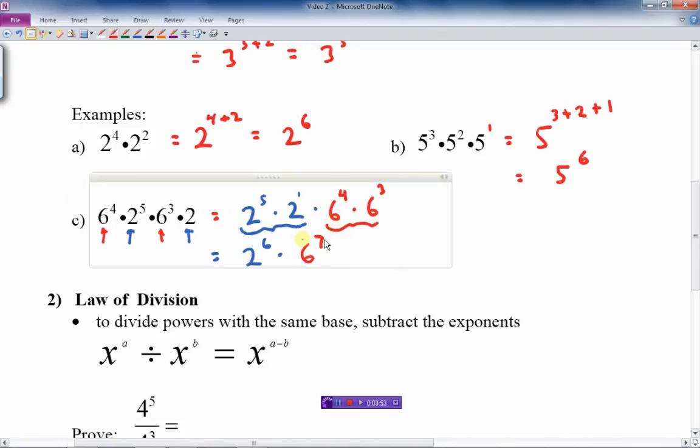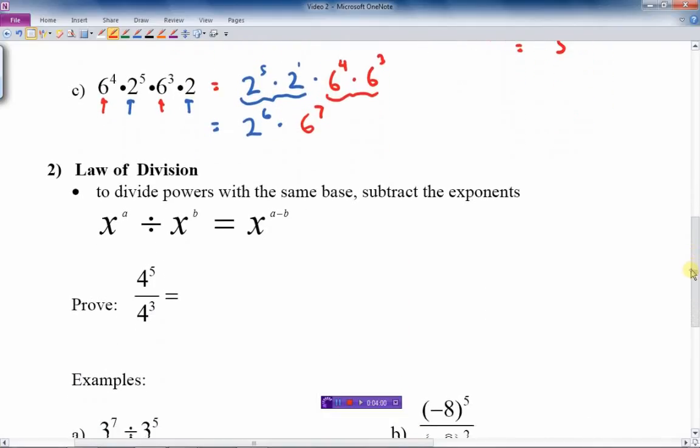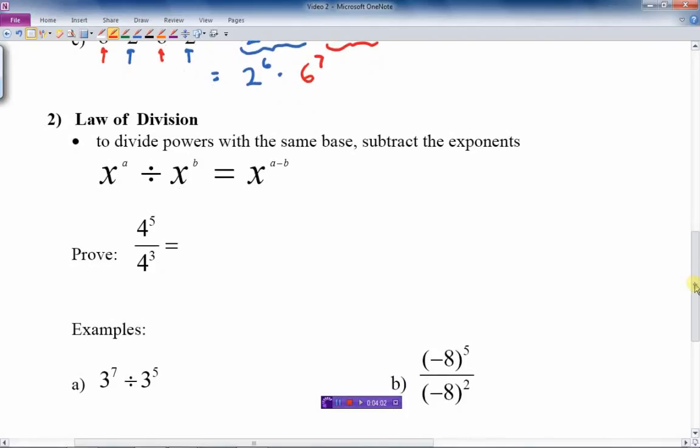Now we could leave that exponential form, or we could calculate the answer. If we had to calculate it, we could multiply 2 by itself 6 times, get 64, multiply that times 6 to the 7th, which would be a huge number, and then get some massive number there. But we're just going to leave it in exponential form right now. That's all we're asked to do.